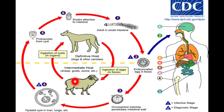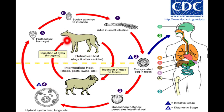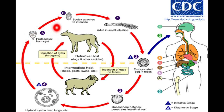When the infected liver or lungs of slaughtered sheep are fed to dogs, the dog ingests the hydatid cyst present inside. The protoscoleces from the cyst come out into the intestine of the dog, attach to the intestinal wall, and mature into adult Echinococcus worms.